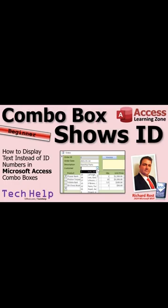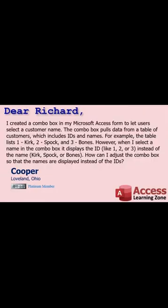Welcome to another tech help video brought to you by accesslearningzone.com. I'm your instructor Richard Rost. Today we're going to talk about what to do if you make a combo box and you see an ID there instead of the text you're expecting to see — like a customer ID instead of the customer's name. Why does this happen and how do you fix it? The next question comes from Cooper in Loveland, Ohio, one of my platinum members.